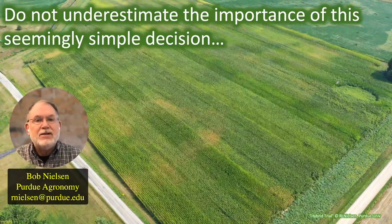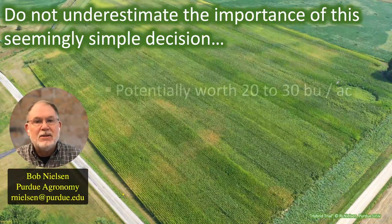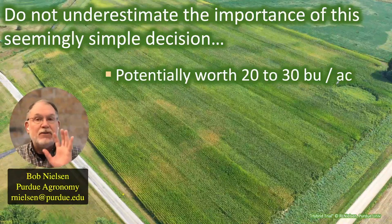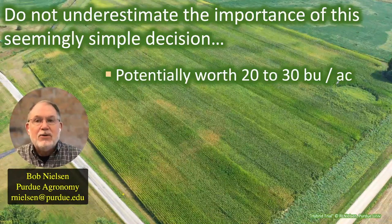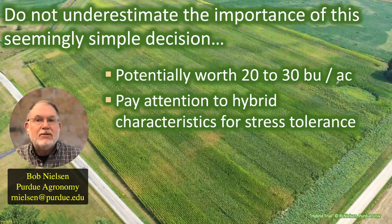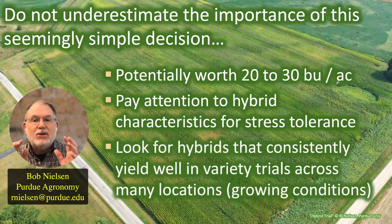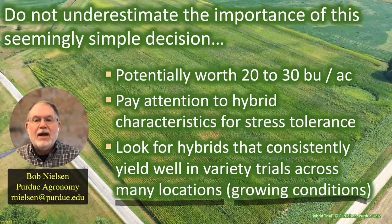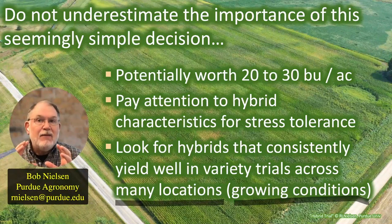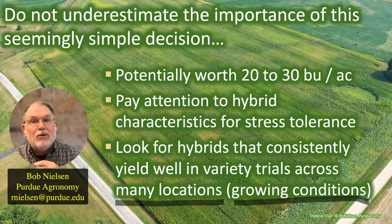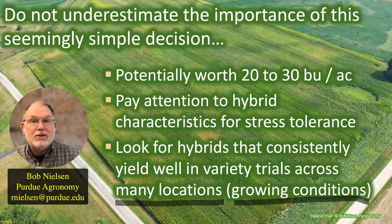Genetic yield potential is one consideration for hybrids, but as we try to make a crop resilient to stress, we need to look at how it can tolerate stress conditions. The best way to address that is to see how it performs in a wide range of variety trials and look for hybrids that do pretty well in most trials. Differences in genetic yield potential among hybrids are easily worth 20 to 30 bushels per acre — there's still an opportunity for a 20 to 30 bushel swing simply due to genetic yield potential, even with today's good hybrids.